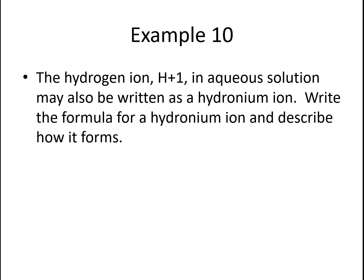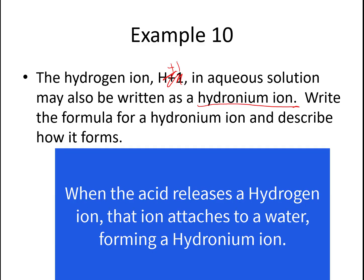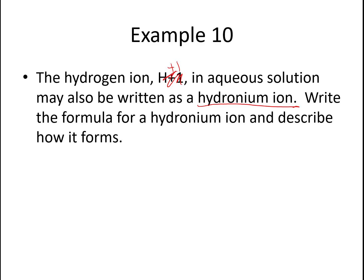Ten. The hydrogen ion, H+1—should have fixed that, that's so annoying—in aqueous solution may also be written as a hydronium ion. Write the formula for a hydronium ion and describe how it forms. All right, I'm not going to ask you to do that here, but in your free response, just give me a rough idea of how a hydronium ion forms from an acid put into water. I was looking for you to tell me something like this: when the acid releases the hydrogen ion, that hydrogen ion attaches to a water and forms a hydronium ion. I'll take a look at your answers after you turn them in. We'll see how you did.